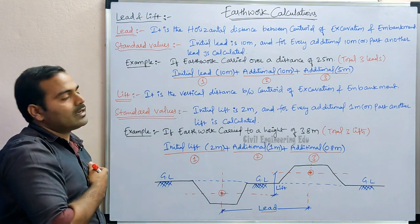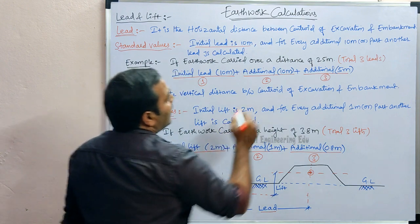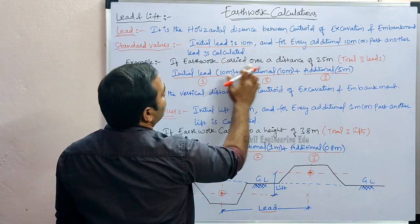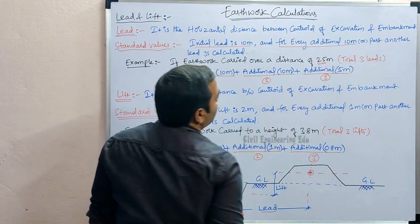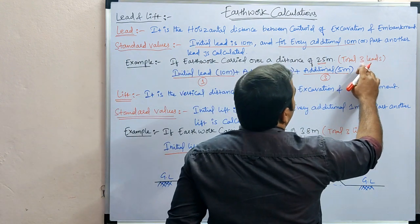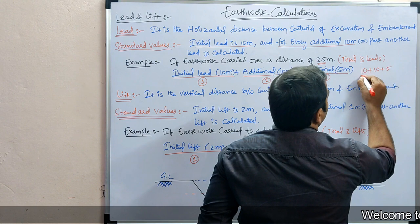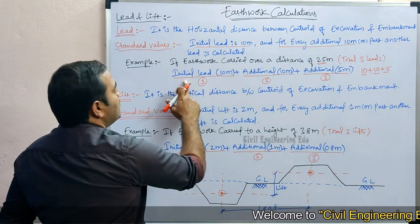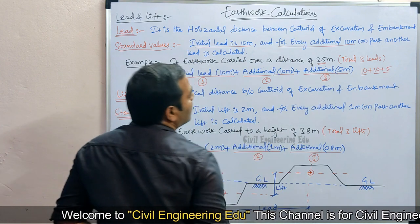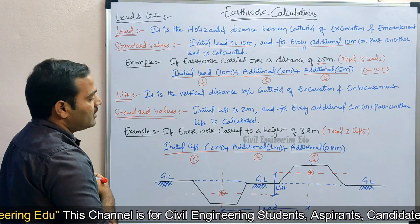The standard values for lead: initially we take 10 meters as one lead, and for every additional 10 meters or part thereof we calculate another lead. For example, if earthwork is carried over a distance of 25 meters, three leads come across: initial 10 meters is one lead, additional 10 meters is two leads, and the remaining 5 meters is a third lead — total three leads.